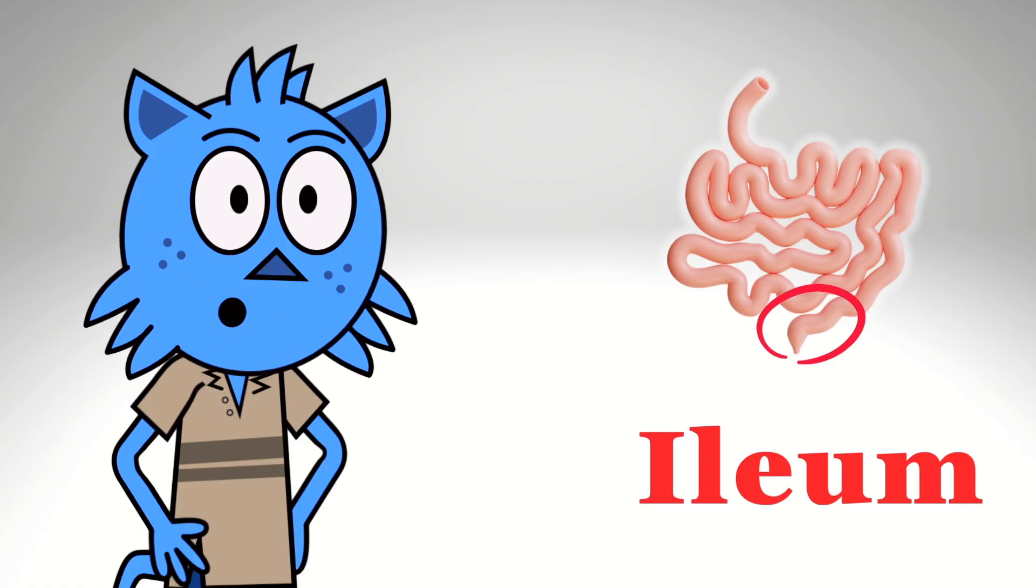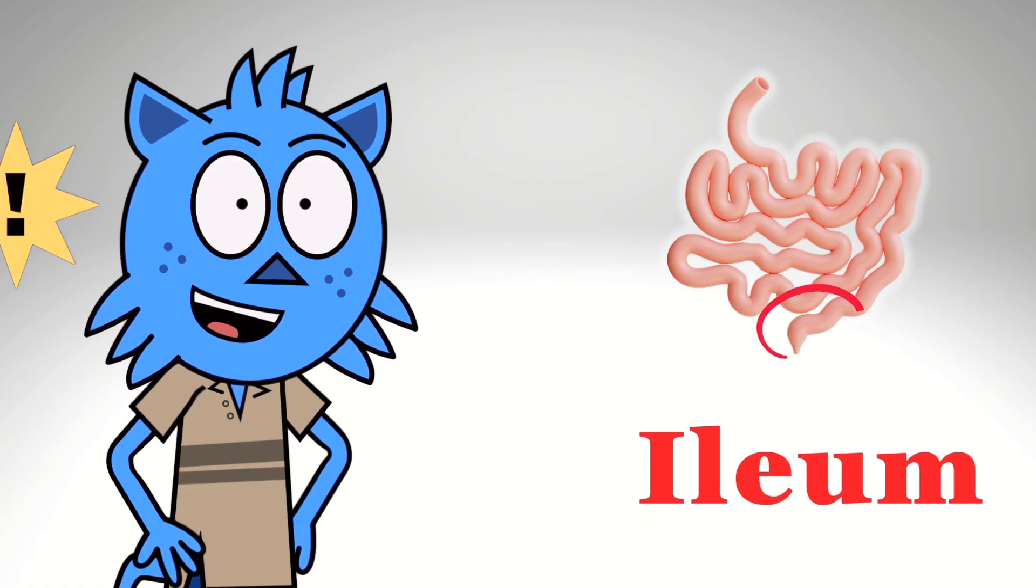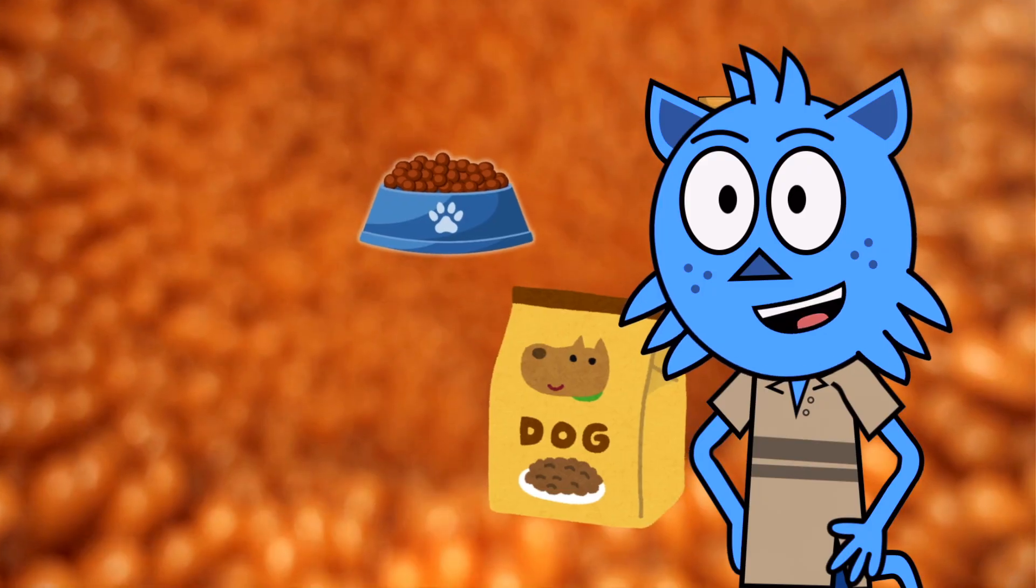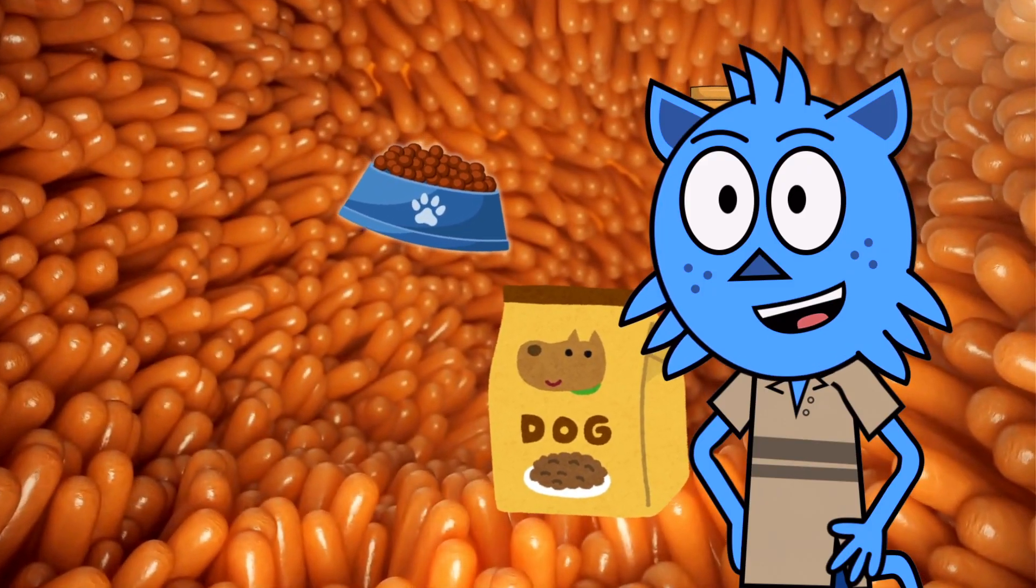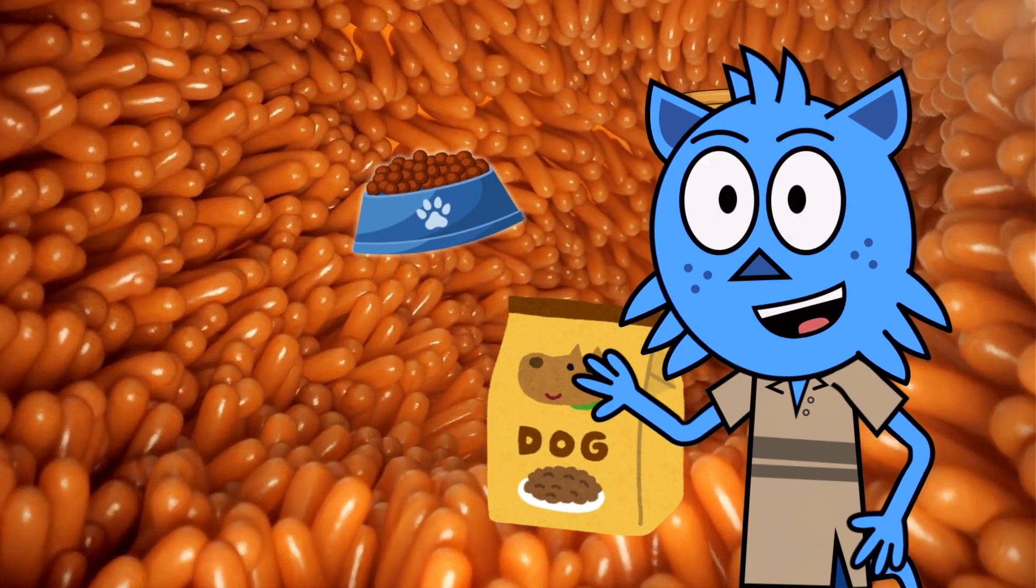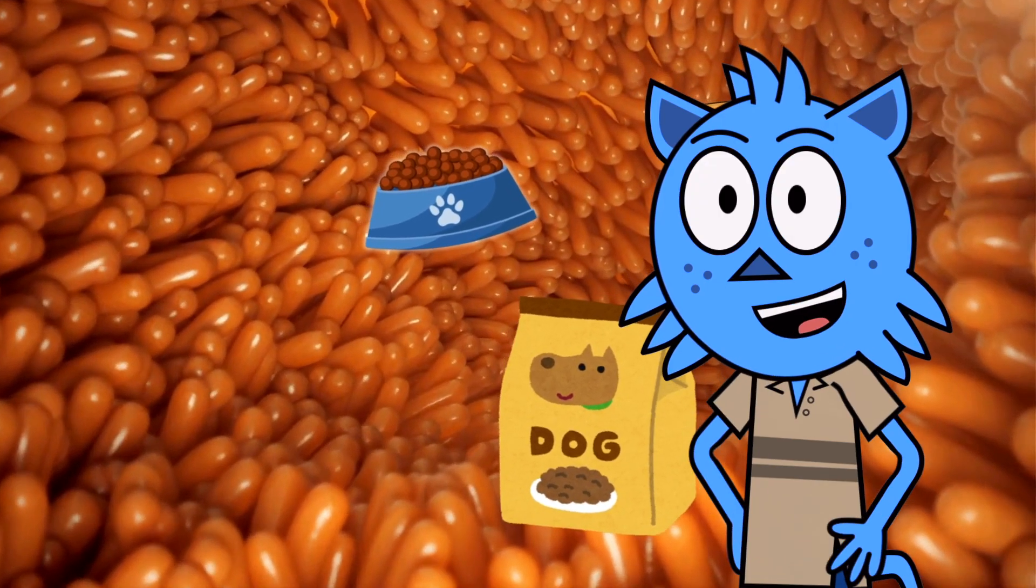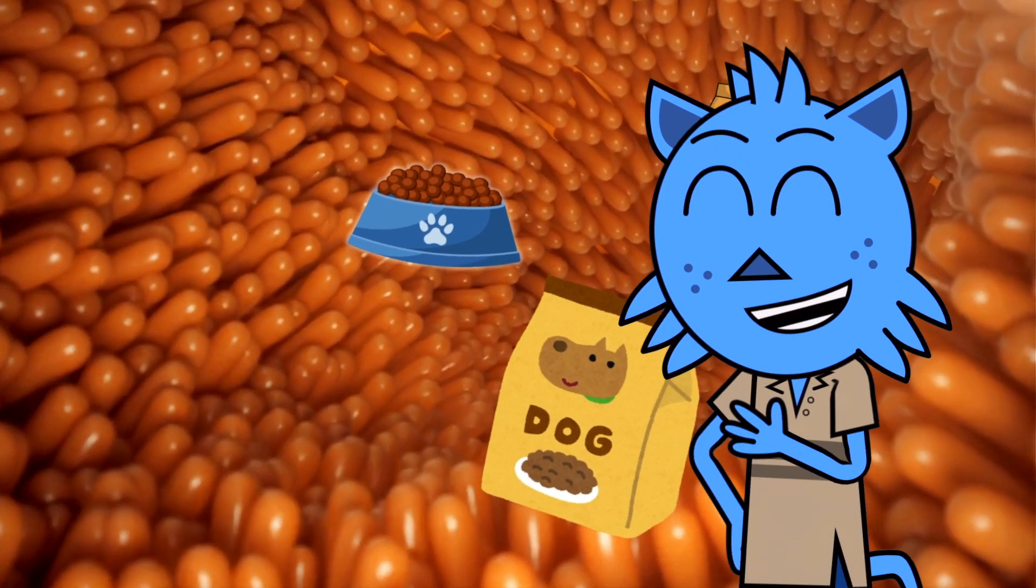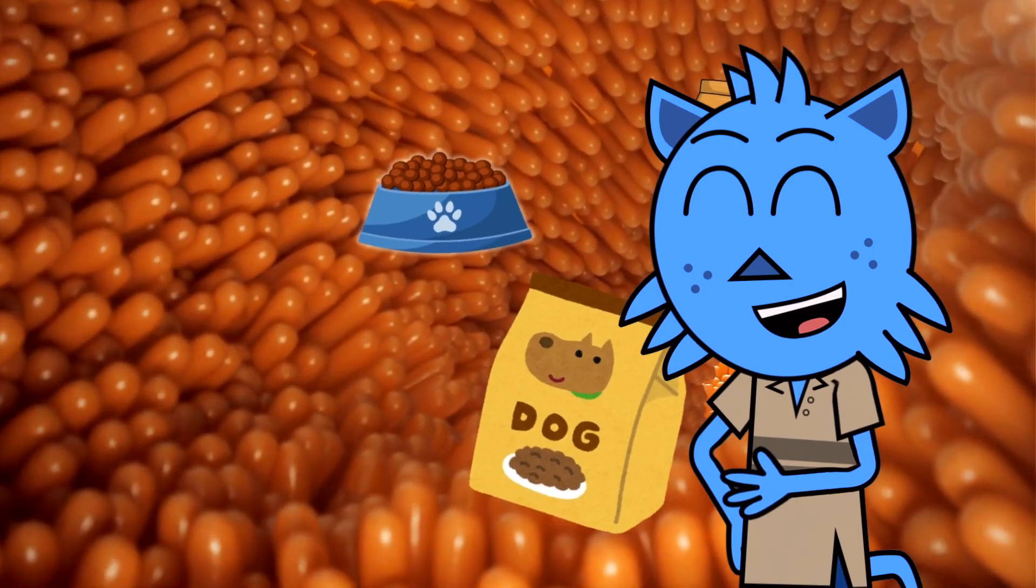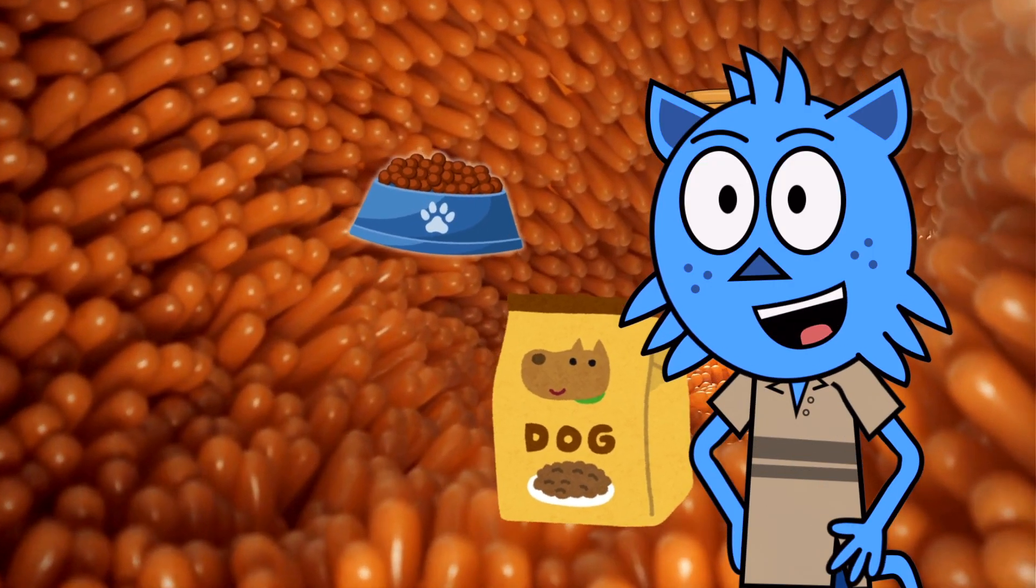Ileum comes at the end where small and large intestines blend. Takes what's left, it does its part before the waste can make a start. Duodenum, jejunum, ileum too. All help dogs just like you. When pups eat their kibble meal. These parts help each bite heal. And feel.